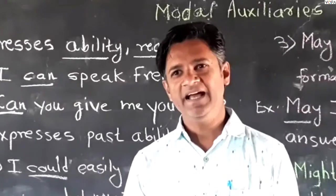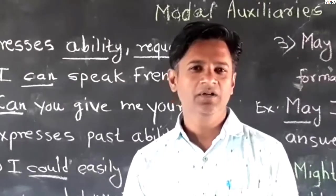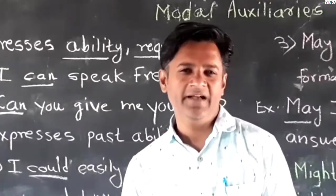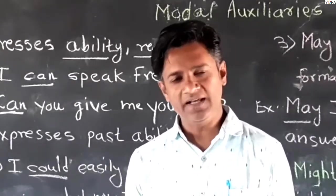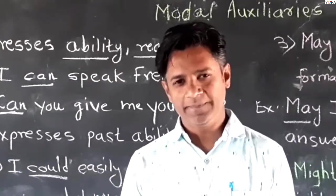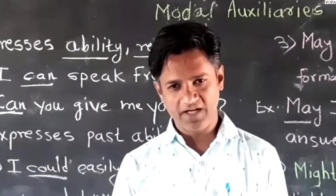We know that am, is, are, was, were, have, has — these are all examples of primary auxiliary verbs.